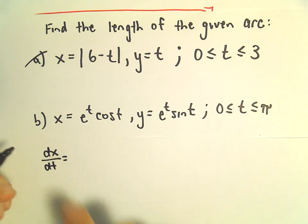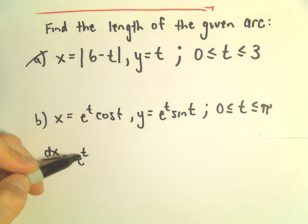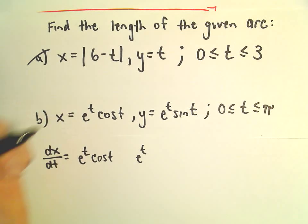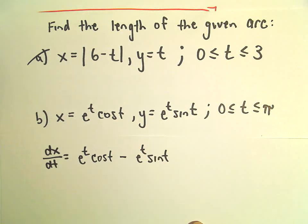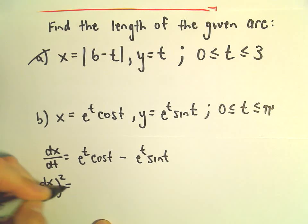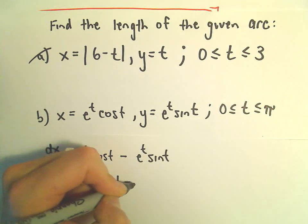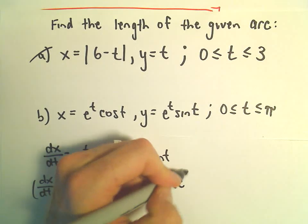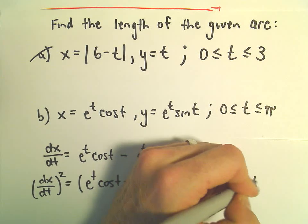If we take the derivative of x with respect to t, we'll have to use the product rule. The derivative of e to the t is just e to the t — we leave the cosine t alone. Then we leave the e to the t alone and the derivative of cosine t will be negative sine t. So dx/dt equals e to the t cosine t minus e to the t sine t.